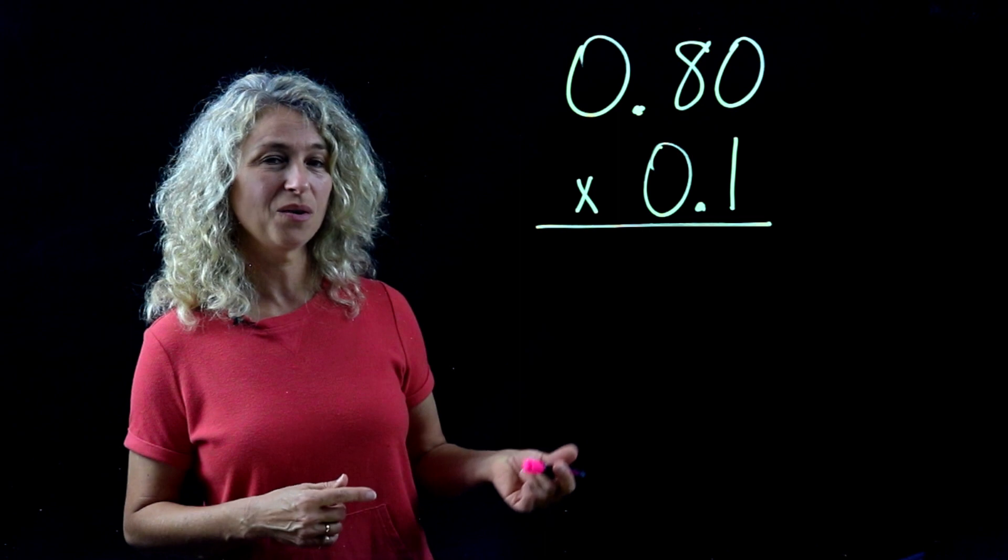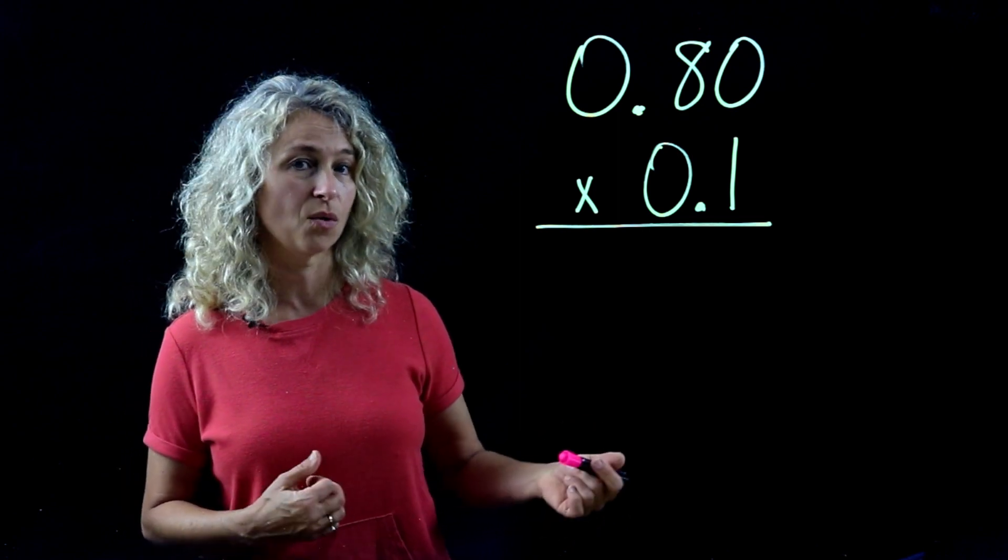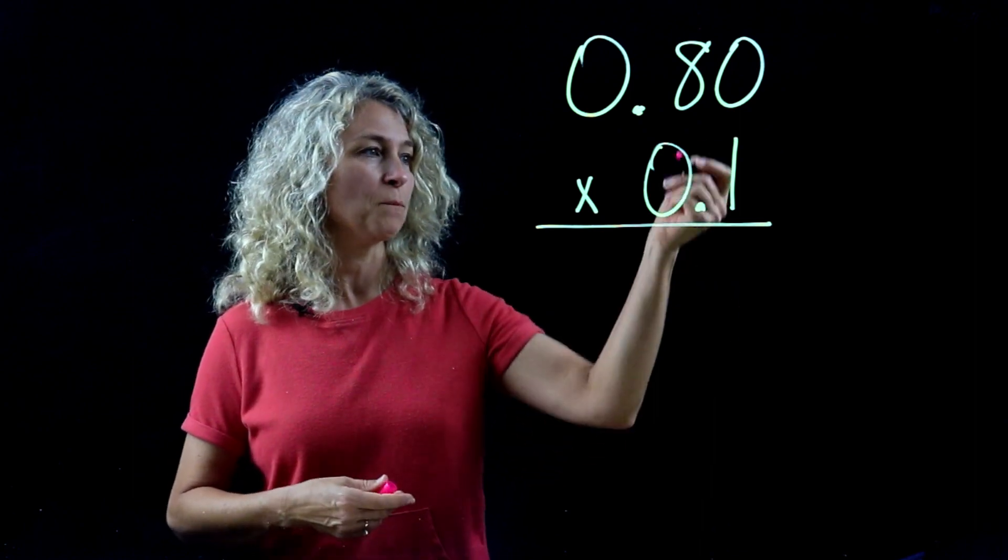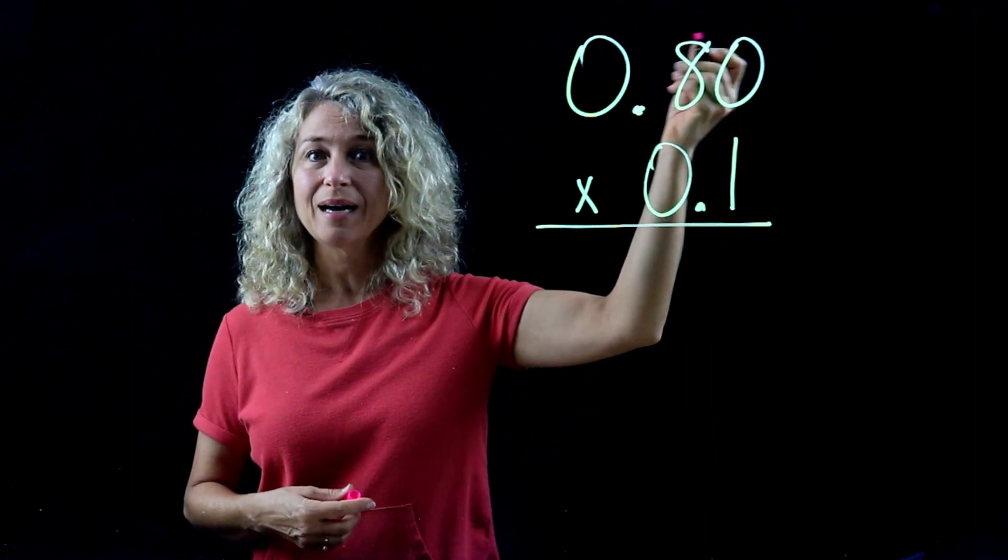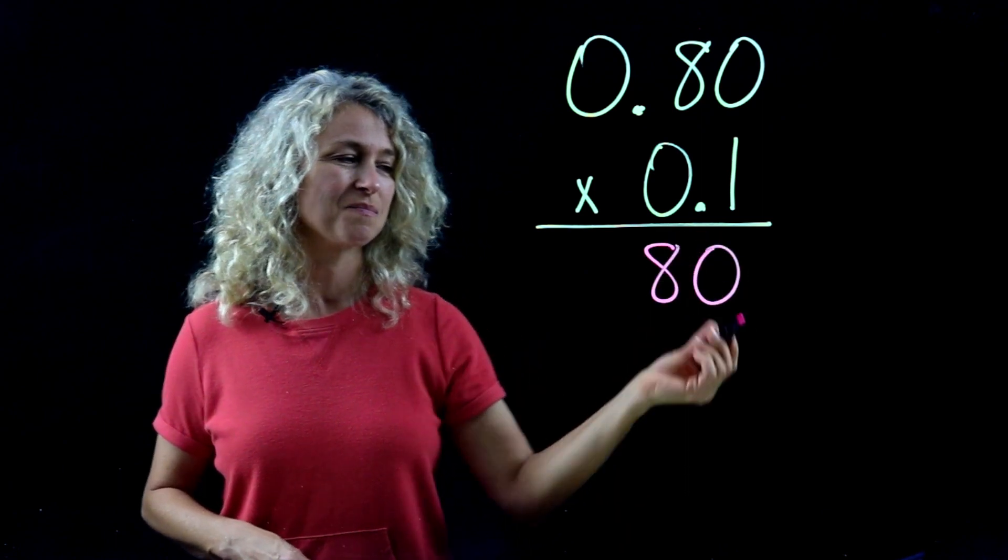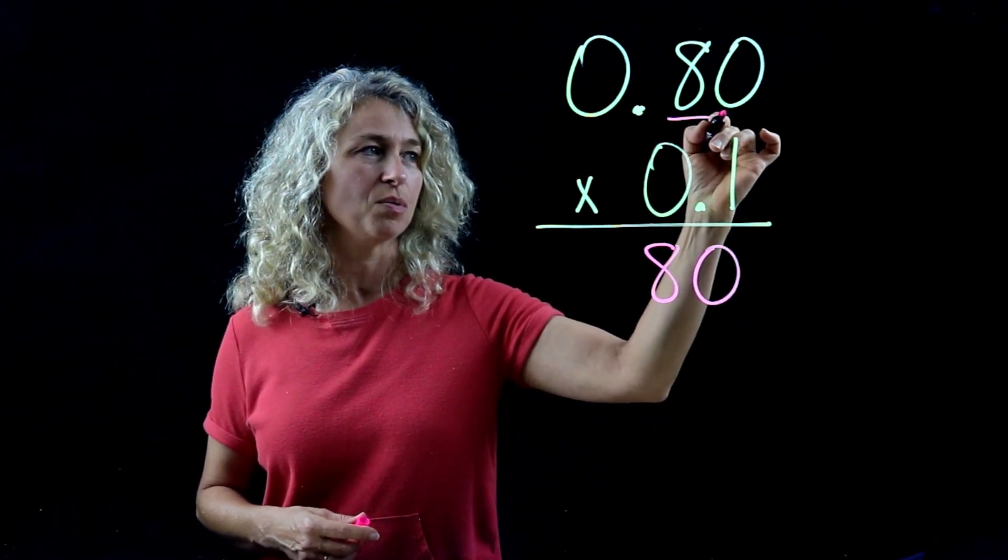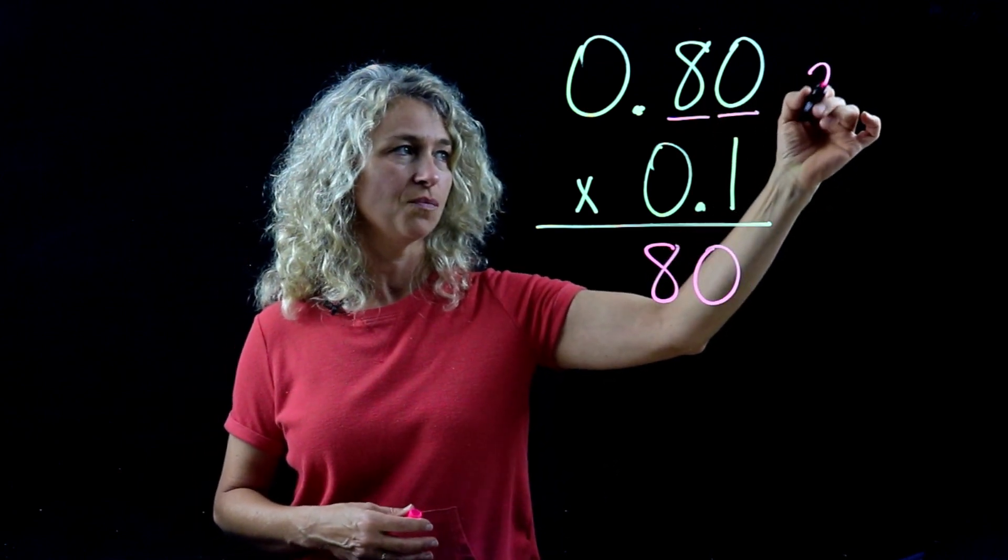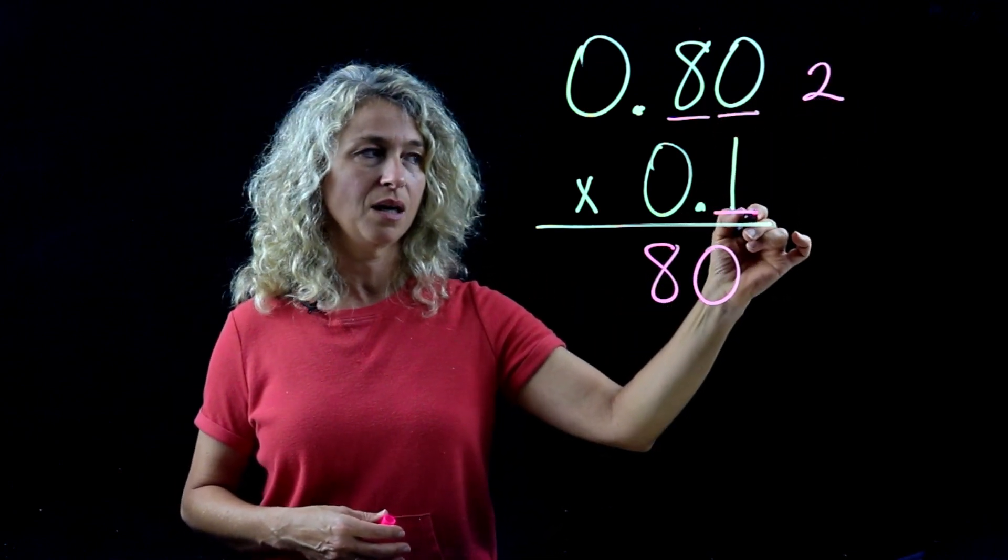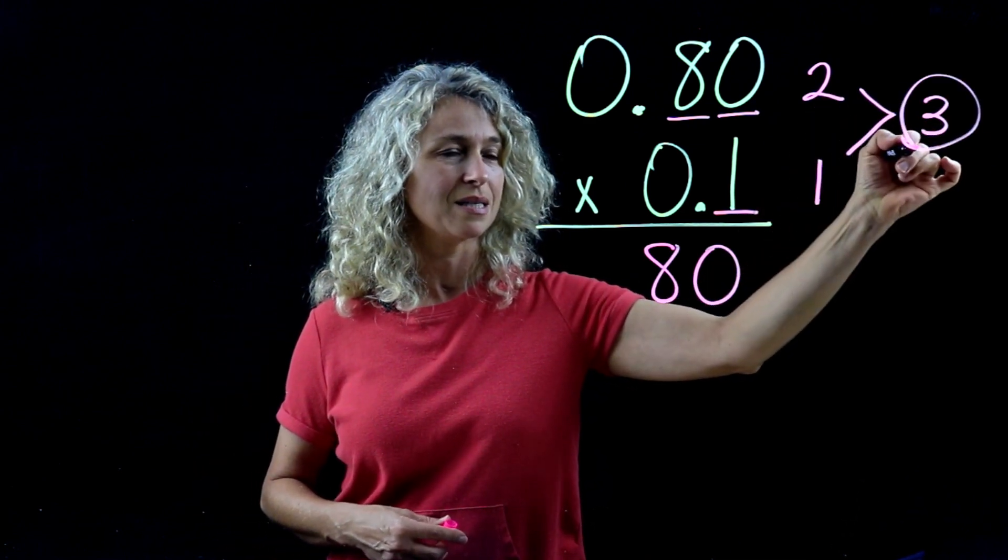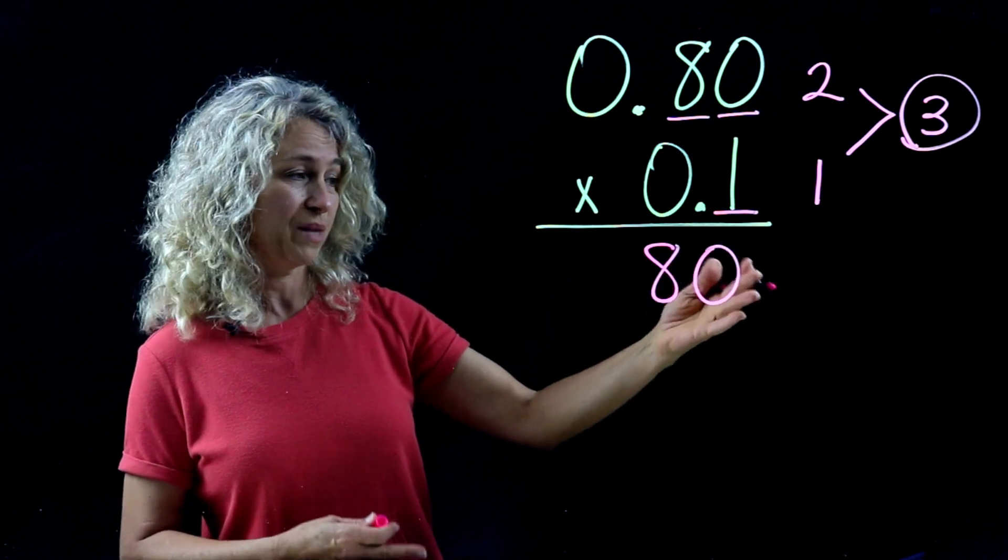So 0.80 hundredths times 0.1 tenth. We'll just multiply 1 times 80. What's 1 times 80? It's just 80, isn't it? And so now count your decimal places to the right of the decimal: 1, 2, and 1 here, for a total of 3 decimal places.